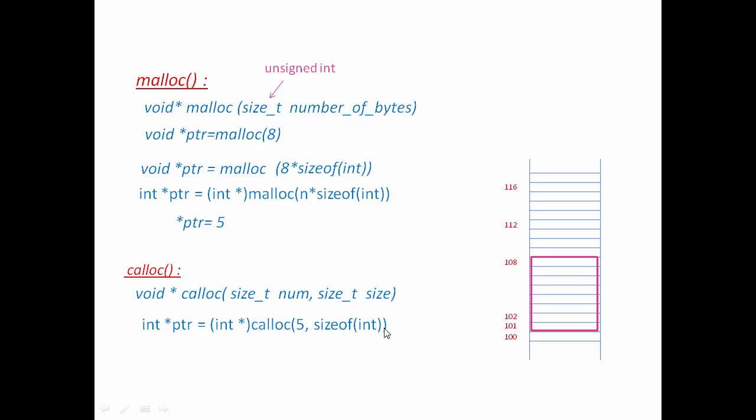Next one is realloc. During the program execution if you want to change the size of the memory then you need to use a function named realloc. The definition of this function is something like this. This function takes two arguments. First one is pointer to the starting address of the existing block and second argument is the size of the new block.